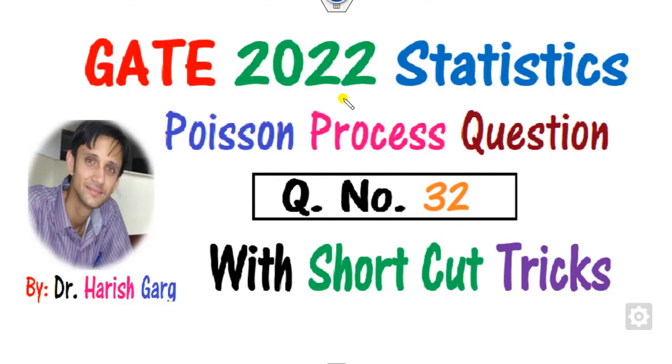Hello students, welcome to the next lecture on GATE 2022 Statistics. Today we will discuss Poisson process question number 32 with the help of very shortcut tricks.